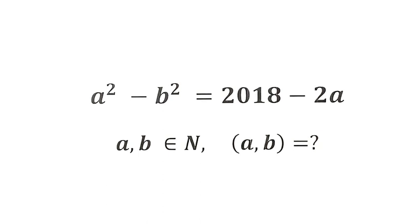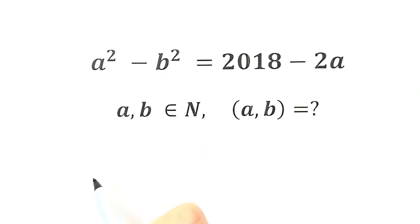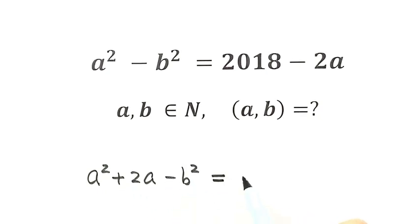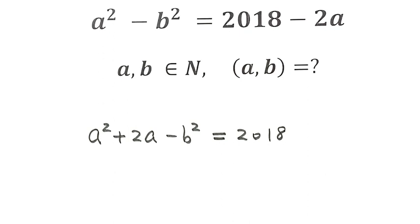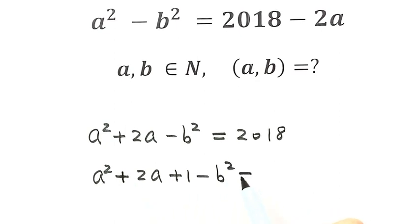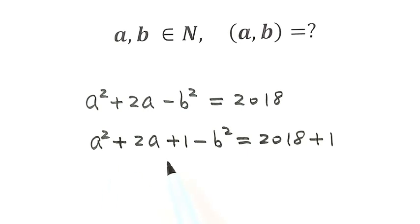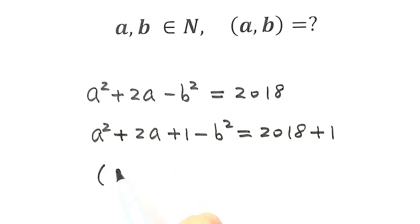Now how to solve this equation? We're going to start by moving this term to the left-hand side. Then we have a squared plus 2a minus b squared equals 2018. Next, add 1 to both sides. Then a squared plus 2a plus 1 minus b squared equals 2019. These three terms make a complete square: that's a plus 1 squared minus b squared equals 2019.